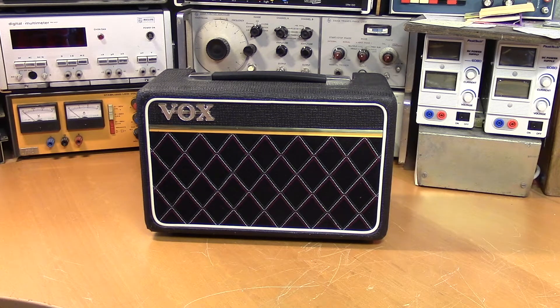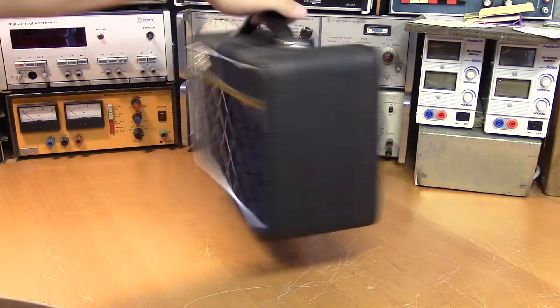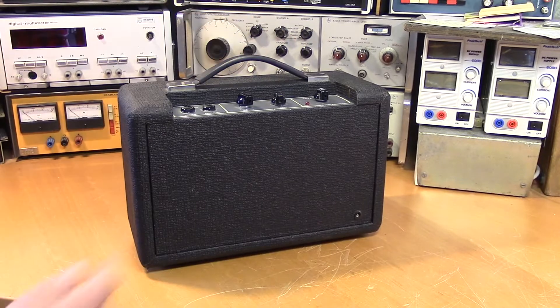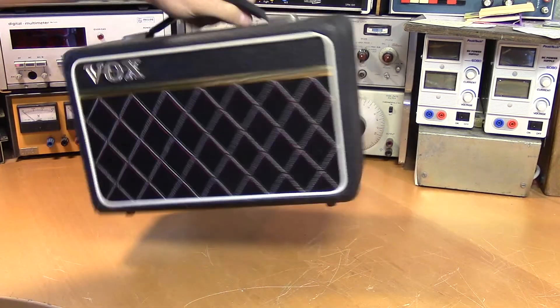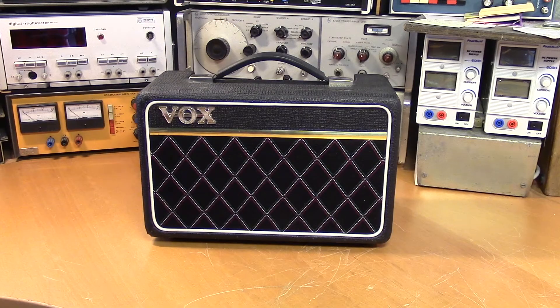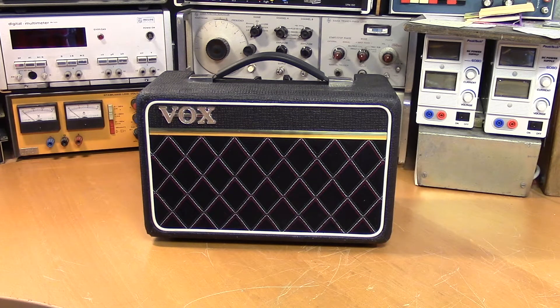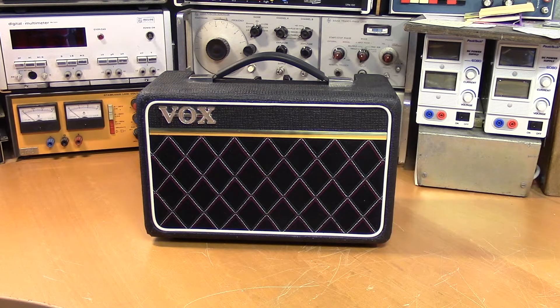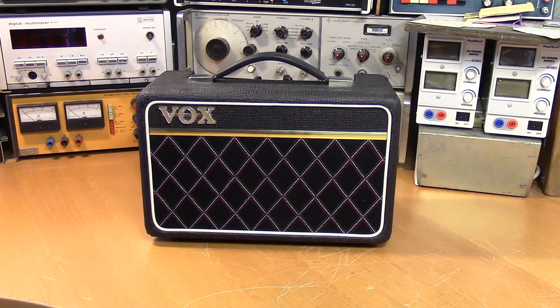Here we have an old Vox guitar amplifier. I can't find a model number in this unit. You would expect some kind of label here. It does look like a modern Pathfinder, but this is way older than that. After doing some research, I found that it's probably a Vox Escort B2.